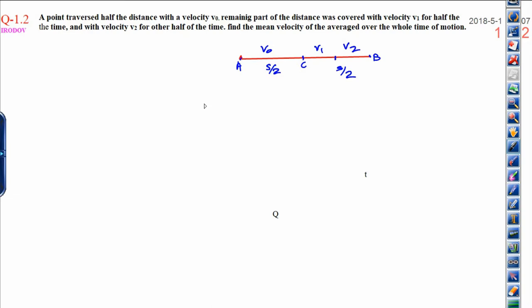Find the mean velocity or the average over the whole time of motion. Average velocity can be calculated. Average velocity, average speed along the straight line, both are the same thing, which is equal to sum of the distances covered divided by total sum of the time.